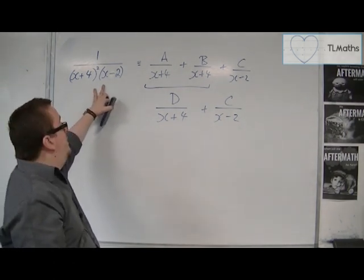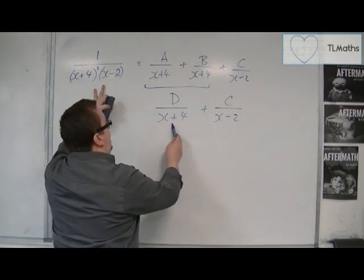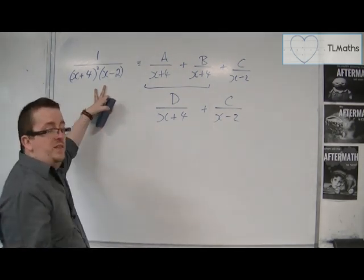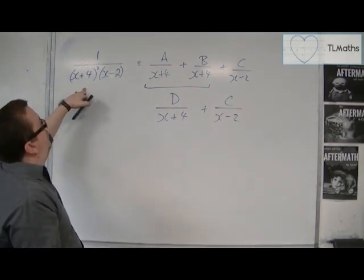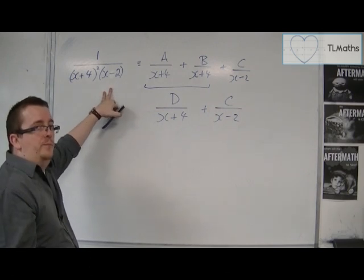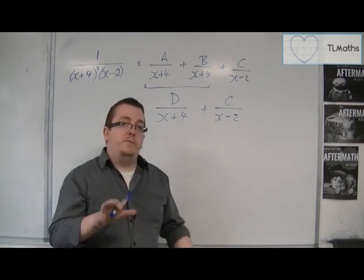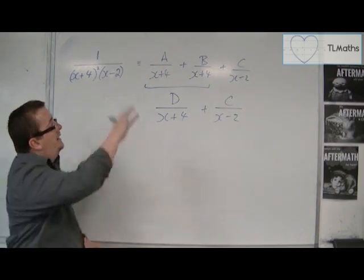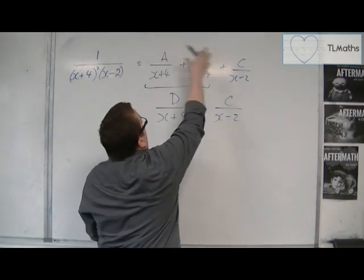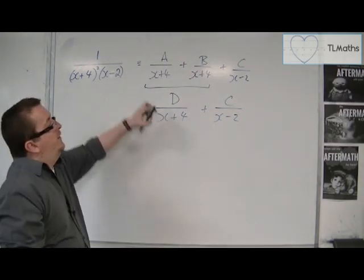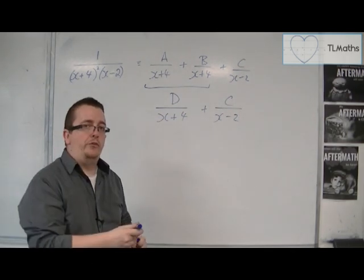But clearly, when I do so, I'm going to get x plus 4 times x minus 2 in the denominator, not x plus 4 squared times x minus 2. So clearly, something has gone wrong. And clearly, that means that this assumption that we could write it like that was wrong.